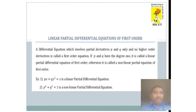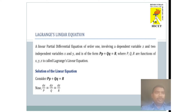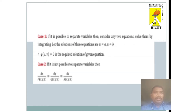Now, we discuss how to solve linear partial differential equations. Lagrange's linear equation is a linear partial differential equation of order 1 involving dependent variable z, two independent variables x and y, and is of the form: capital P · p + capital Q · q = R, where capital P, capital Q, and capital R are functions of x, y, z. This is called Lagrange's linear equation. First of all, we find the auxiliary equation, also called the subsidiary equation, written as dx/P = dy/Q = dz/R.